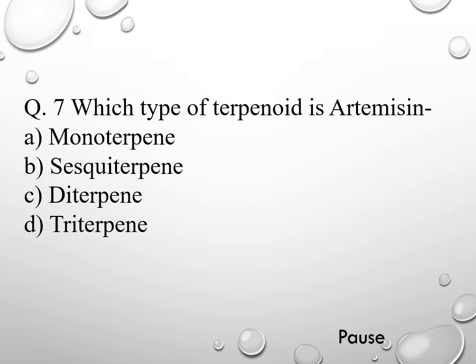Question 7. Which type of terpenoid is artemisinin? Option A monoterpene, option B sesquiterpene, option C diterpene, and option D triterpene. The right answer is sesquiterpene.